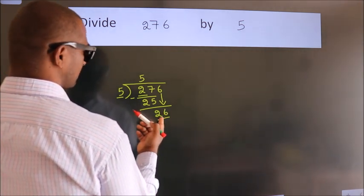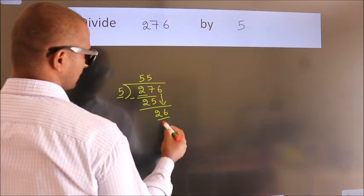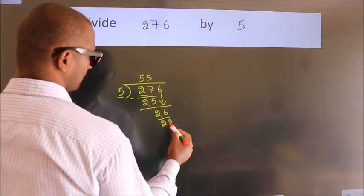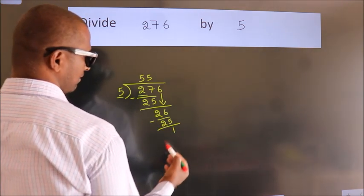A number close to 26 in the 5 table is 5 fives, 25. Now we subtract. We get 1.